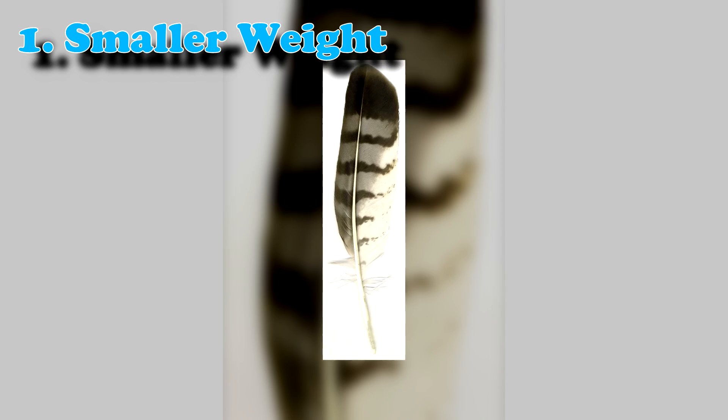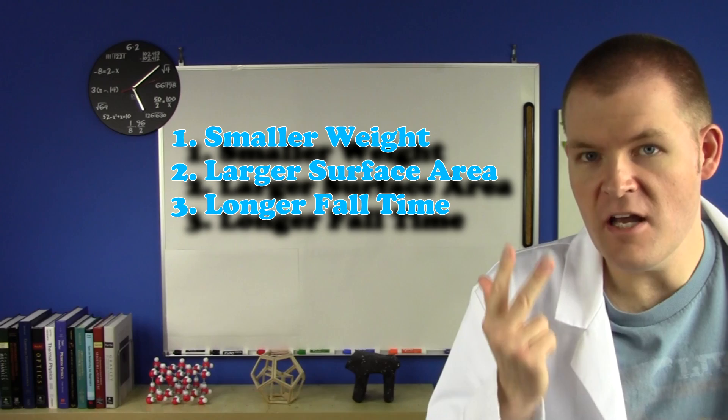There are three factors that increase the air's influence. A smaller weight, a larger surface area, and a longer fall time. We can't increase the paper's weight, so let's reduce its surface area. Racquetball? Crumpled piece of paper. Same time.